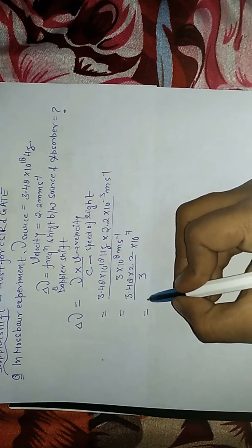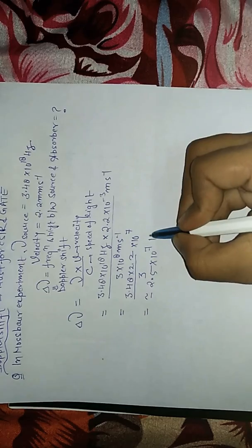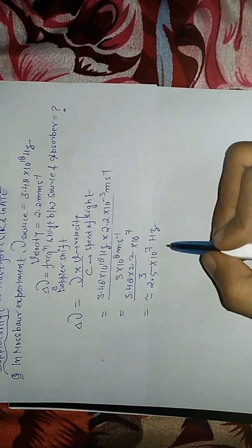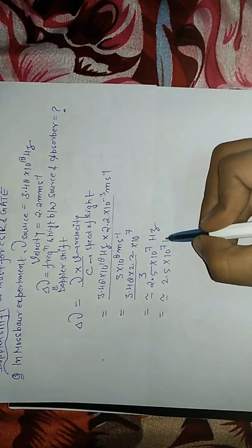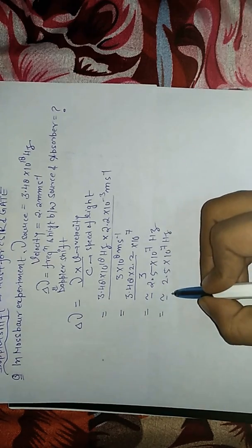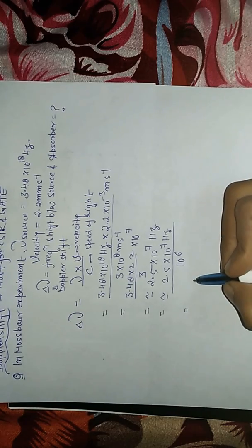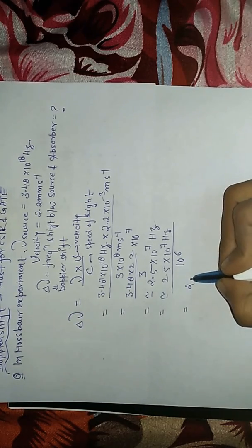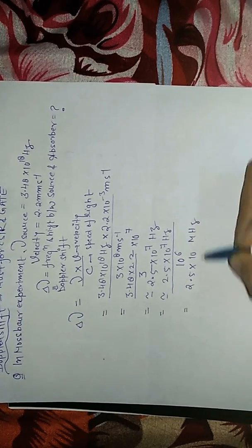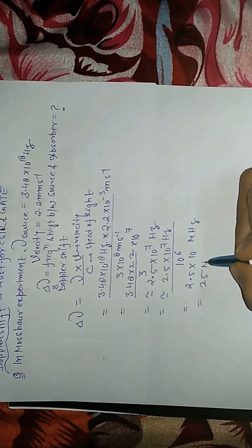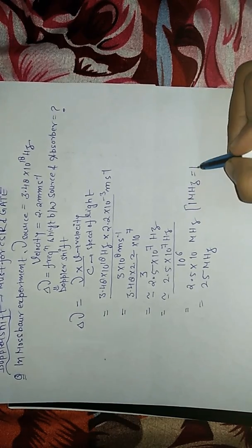By dividing we get around 2.5 × 10^7 hertz. We can write it as 2.5 × 10^7 hertz. Just divide by 10^6, then we will get 2.5 × 10 megahertz. This means around 25 megahertz because 1 megahertz equals to 10^6 hertz.